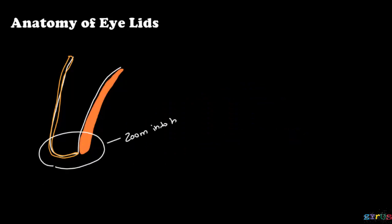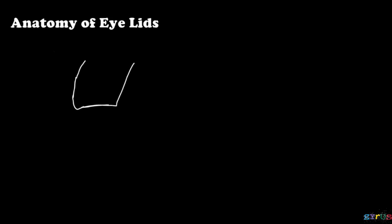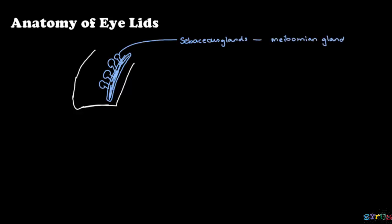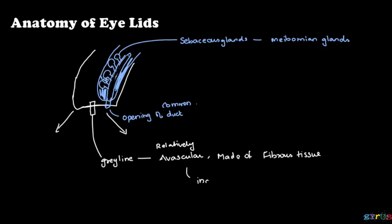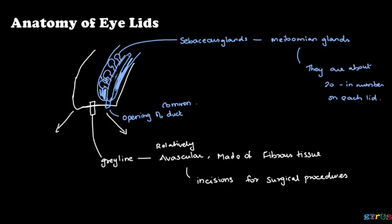Now let's zoom in into the margin of the eyelid and study its structures. The anterior border is curved and only the posterior border is sharp. This is the tarsal plate in which the sebaceous Meibomian glands are embedded. Between the Meibomian opening and the anterior border, there is a grey line. It is made of fibrous tissue and hence incisions for surgical procedures are done at this point. The Meibomian glands are about 20 to 30 in number on each of the lids.